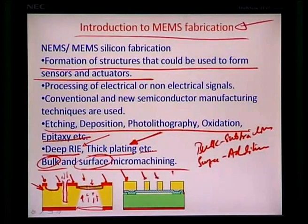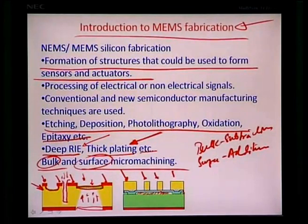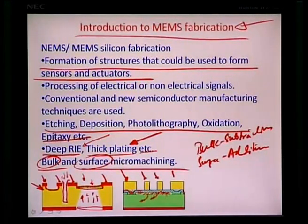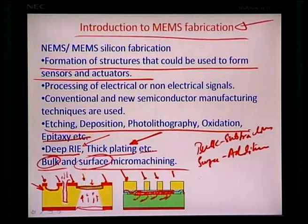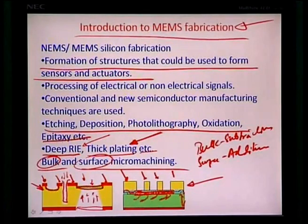In surface micromachining, a sacrificial material is deposited, a layer of polysilicon is deposited on top, and then the sacrificial layer is removed — for example by dipping in acetone — leaving an embedded channel in the polysilicon layer. The underlying wafer is not subtractively etched; instead, the structure is additively built upon the surface. This is the essence of surface micromachining.